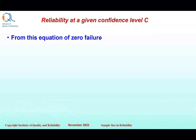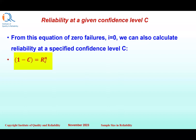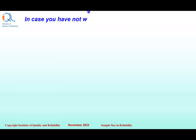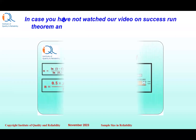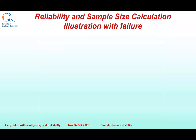From the equation for zero failures, we can also calculate reliability at a specified confidence level C. We have seen that 1 minus C equals R raised to the power N. Therefore reliability at a given confidence level C, denoted Rc, equals (1 minus C) raised to the power 1 upon N. In case you have not watched our video on the Success Run Theorem and using templates, a link is provided in the description of this video.